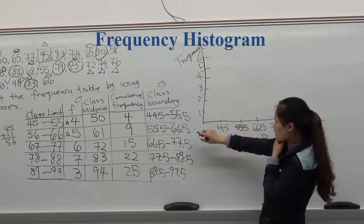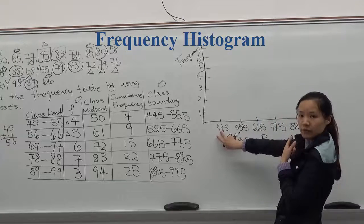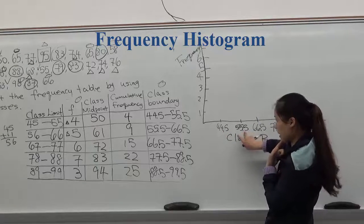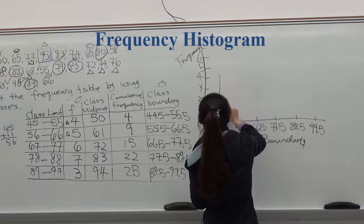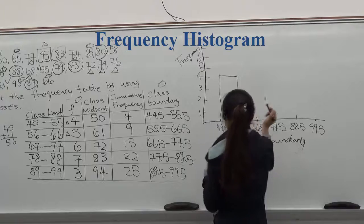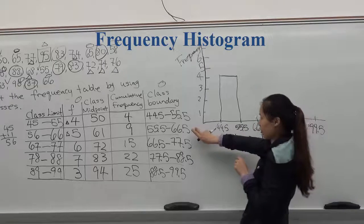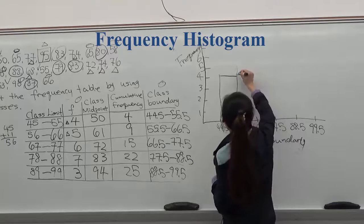To construct first frequency histogram, we know the class boundary between 44.5 to 55.5 has a frequency of 4. And the second class boundary, 55 to 66.5, has a frequency of 5.